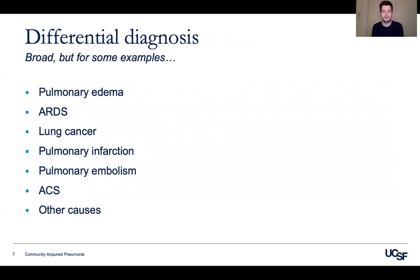The differential diagnosis for CAP is broad, but conditions that could mimic CAP include pulmonary edema, ARDS, lung cancer, pulmonary infarction, pulmonary embolism, and ACS. It's similarly important to remember that the differential for dyspnea is profoundly broad, including cardiac, pulmonary, metabolic, neuropsychiatric, and neuromuscular causes, making it difficult to come up with a short list.